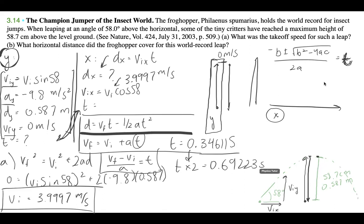And now that we have our VI, so we have our time now and we have our VIX, we just have to solve for our distance. So it's going to be 3.9997 cos 58 times 0.69223. And I'm getting 1.464 meters. That's our distance traveled in the horizontal.